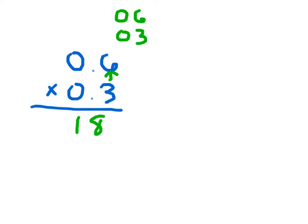Since we need two decimal places, we go ahead and count from the right: 1 and 2. If we place our decimal point right here, we have 0.18. When we write 0.18 and there are no whole ones, we do write that 0 in front of it.